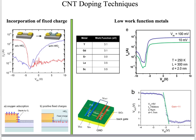The second challenge is NFET fabrication, which has recently been achieved using two different methods. The first method is incorporation of fixed charge using high-k dielectrics. Certain ALD-deposited dielectrics have positive fixed charge that can shift the bands of carbon nanotubes. For example, an as-made device is a PFET, but after depositing hafnium dioxide on top of the carbon nanotube transistor, it turns out to be an NFET.